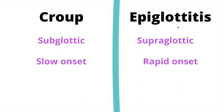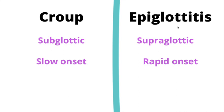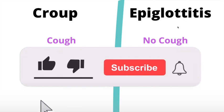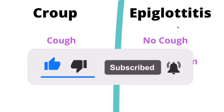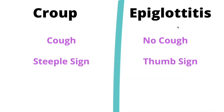For parents, it kind of seems like one minute their child is okay, the next minute they're having difficulty breathing, they're drooling, they're in the tripod stand — so just remember, rapid onset for epiglottitis. In croup, they have the classic seal bark cough, while in epiglottitis that isn't so common. On X-ray, we see the steeple sign on the anterior-posterior view; however, on the lateral view, we see the thumbprint sign in epiglottitis.